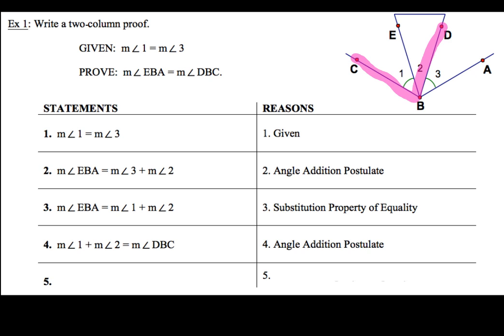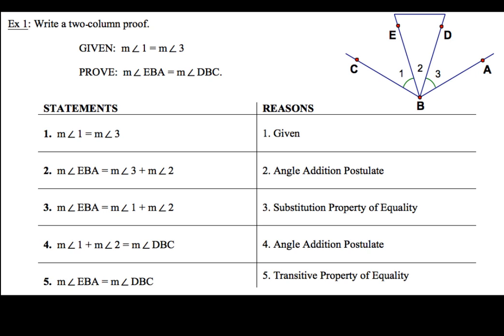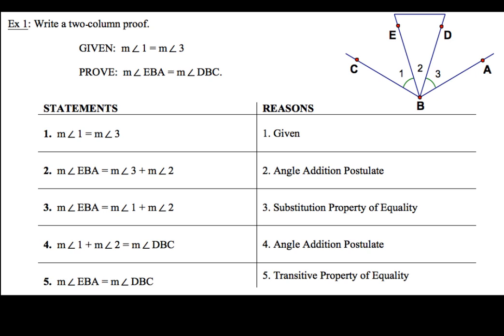Now, pay close attention to statements 3 and 4. Notice that the measure of angle 1 plus the measure of angle 2 is the same in both. So we can use the transitive property of equality to set the measure of angle EBA equal to the measure of angle DBC. My final statement says measure of angle EBA equals measure of angle DBC, and the reason is the transitive property of equality. Always double-check: if what you had to prove matches your last statement, you are finished. If not, continue until your last statement matches exactly what the proof asks.